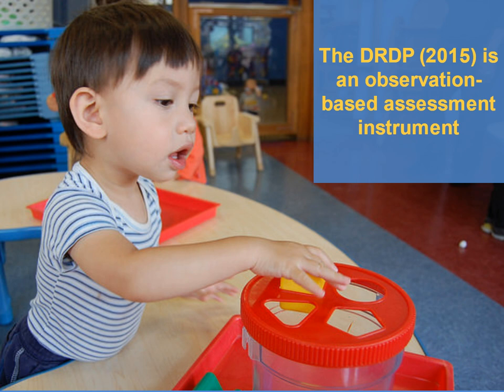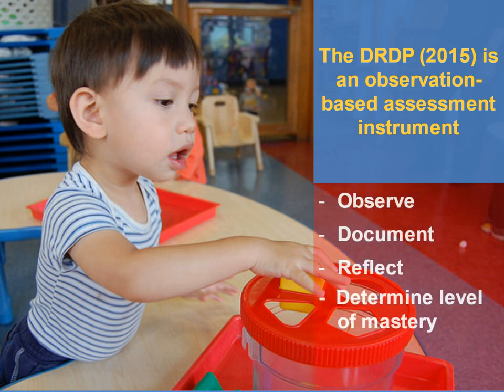The DRDP 2015 is an observation-based assessment instrument. In order to rate infants and toddlers on the DRDP 2015, teachers observe infants and toddlers and collect documentation of growth and development over time during the course of the daily routine. Periodically, teachers reflect on what the collected evidence tells about each child and then determine a child's level of mastery on the DRDP 2015 measures.